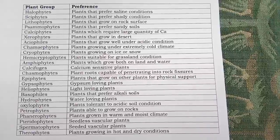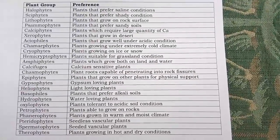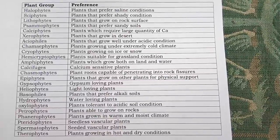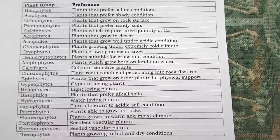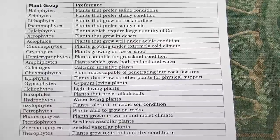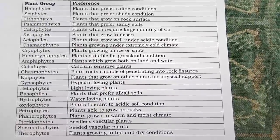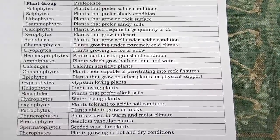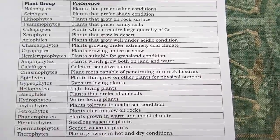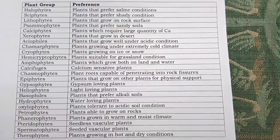Xerophytes grow in desert areas. Acidophiles grow under acidic conditions. Cryophytes grow under extremely cold conditions or on ice and snow. Chamaephytes are plants suitable for grassland conditions. Amphiphytes grow on both land and water.